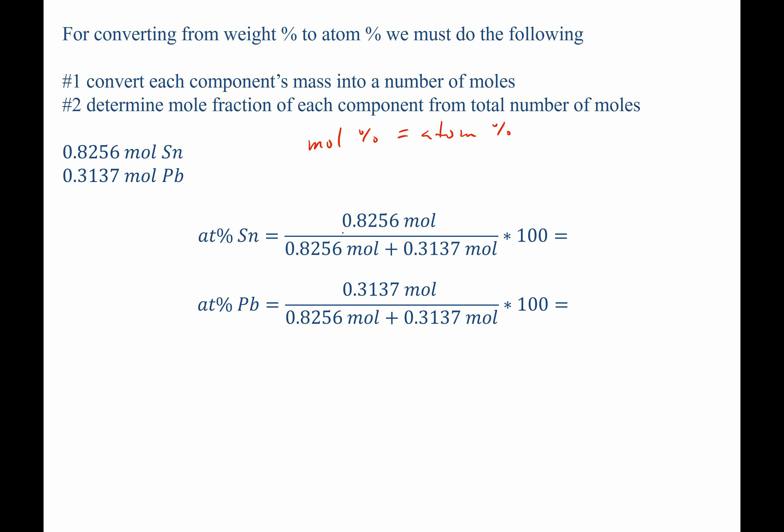For tin, we know that we have 0.8256 moles, and the total number of moles is 0.8256 plus 0.3137. Taking that fraction, we find that the atomic percent of tin is 72.47 atomic percent tin. Doing the same thing for lead, we find that it's equal to 27.53 atomic percent lead.